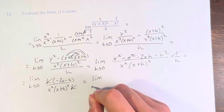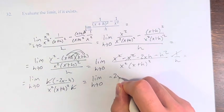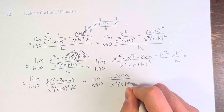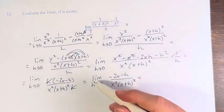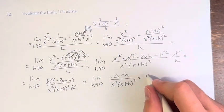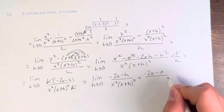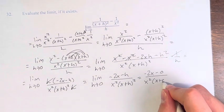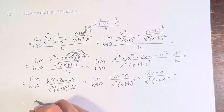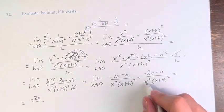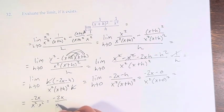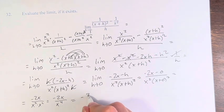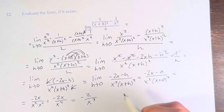We're left with the limit as h approaches 0 of (negative 2x minus h) over x squared times (x plus h) squared. Now we can plug in 0 for h without dividing by 0. So we have negative 2x minus 0 over x squared times (x plus 0) squared, which equals negative 2x over x squared times x squared, which is negative 2x over x to the fourth, which simplifies to negative 2 over x cubed. Therefore the value of this limit is negative 2 over x cubed.